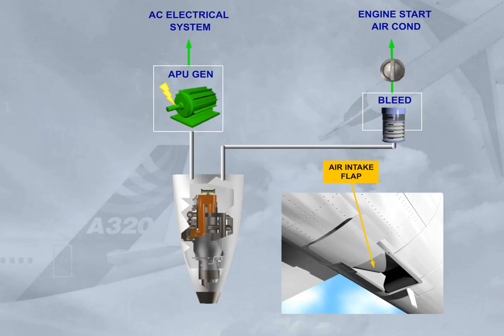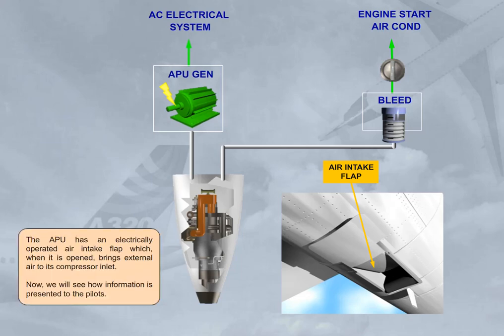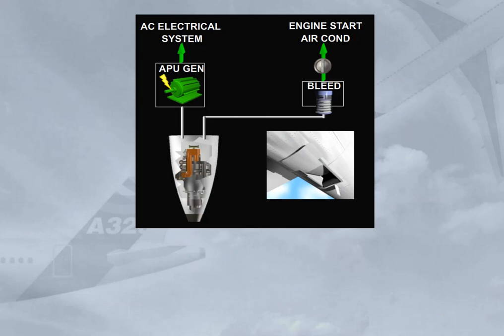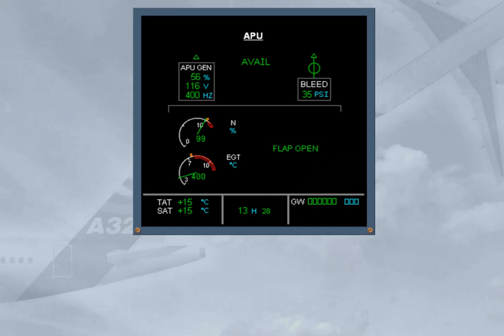Now we will see how information is presented to the pilots. In the cockpit, you can check the following APU parameters on the ECAM APU page: EGT and compressor speed, APU generator, APU bleed, and air intake flap position.